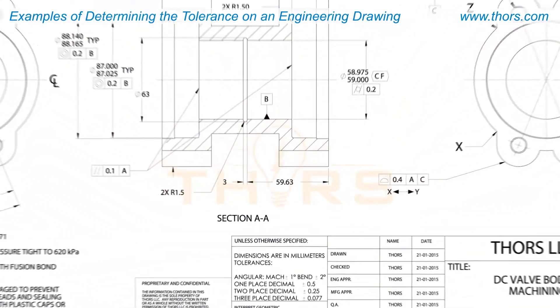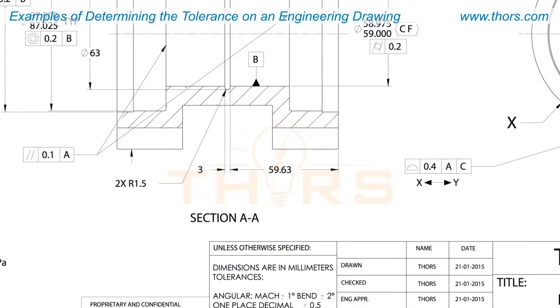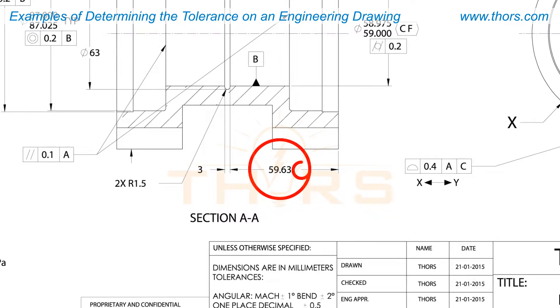Tolerance information can be located within the drawing itself. If a dimension does not have a tolerance beside it,